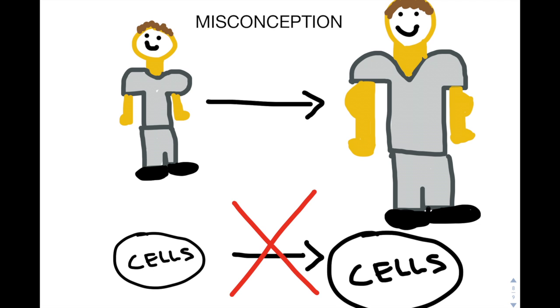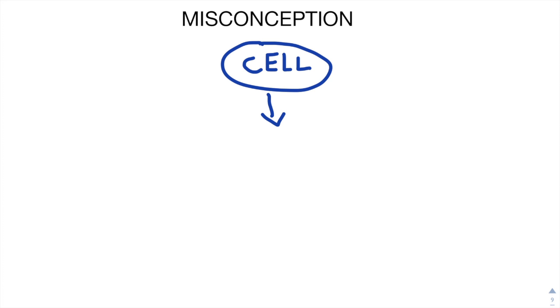This is actually false because cell growth happens to be before cell division. Cell growth happens when cytoplasmic mass and surface area increases, which is what happens in a growing organism.